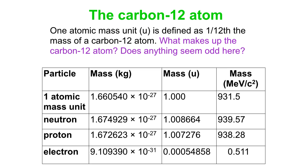Let's think about the atomic mass unit being defined as a twelfth of the carbon-12 atom. But what makes up the carbon-12 atom? It's six neutrons, six protons, and six electrons. If you add those things up, what would you get? Look at the mass in atomic mass unit, the U column.